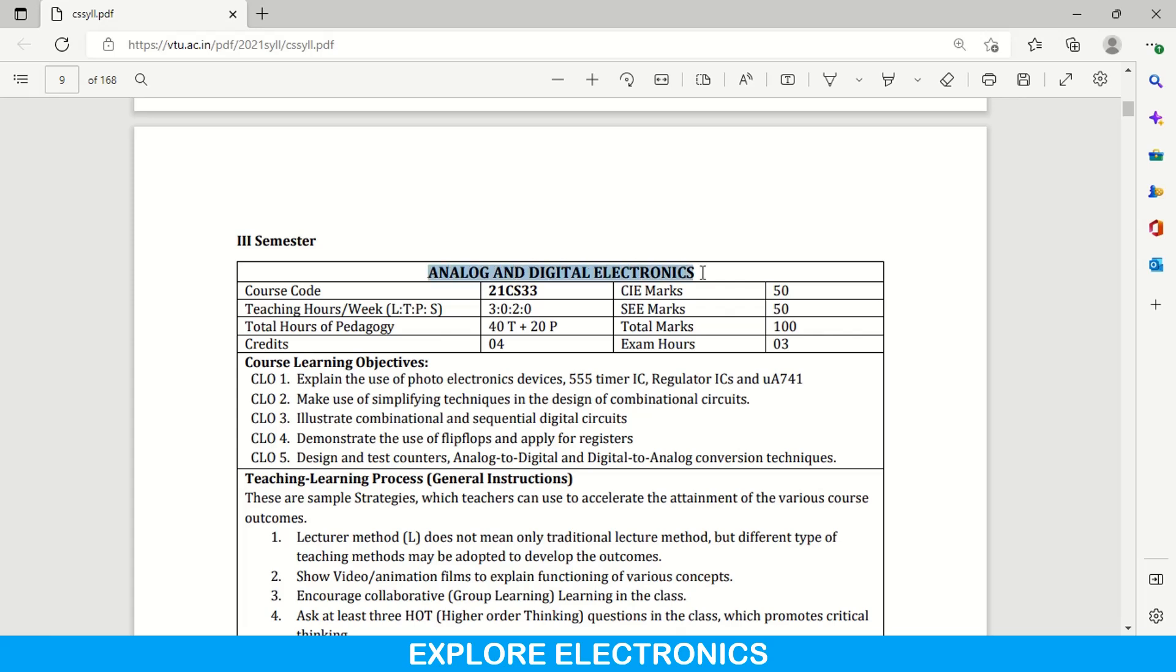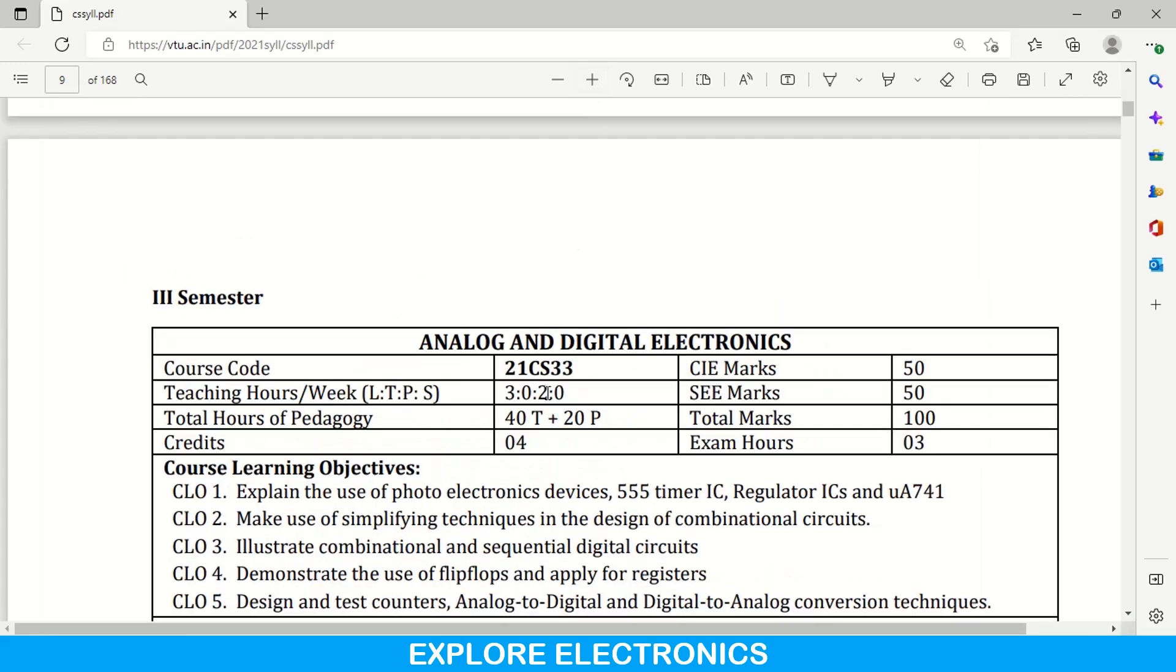Let us see the syllabus of analog and digital electronics subject that is 21 CS 33. In this subject, you can see here teaching hours per week, it is given as 3-0-2-0. It means this subject will be consisting of theory part as well as the practical part.